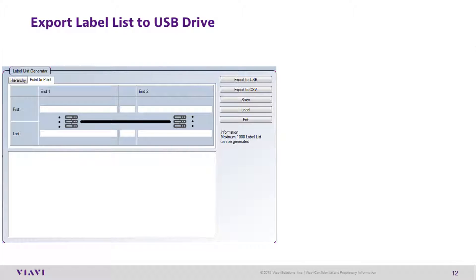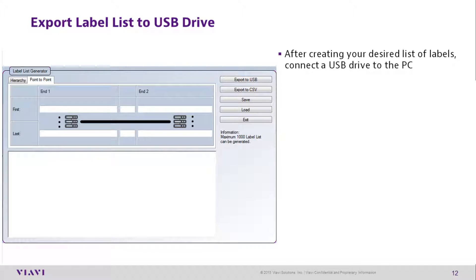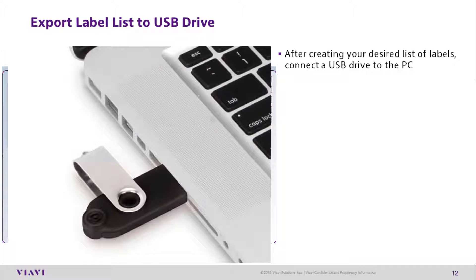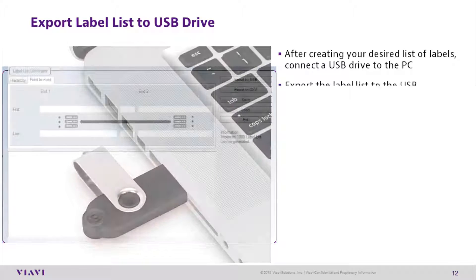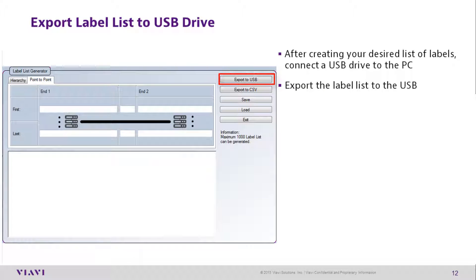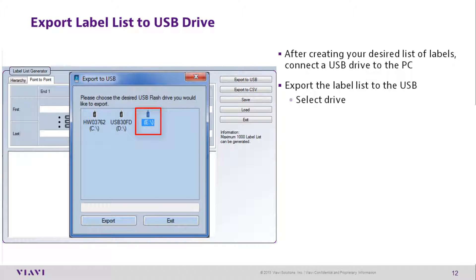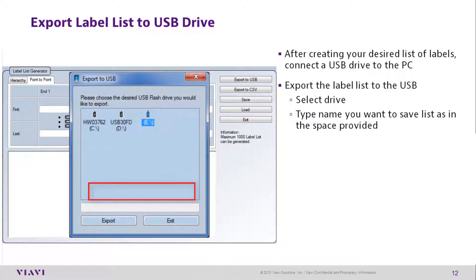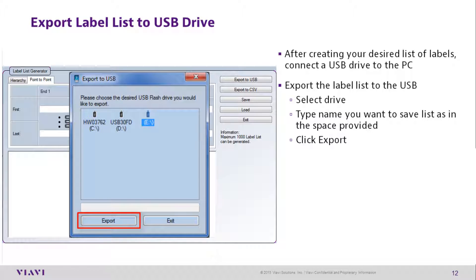To export label lists to USB, after creating your desired label list connect the USB to the PC and export the label list to USB. Select the drive you want to use, type the name you want to save the list as, then click Export. Finally, eject the USB drive.